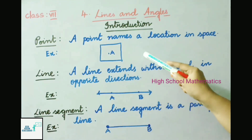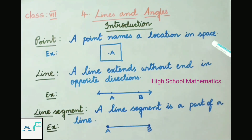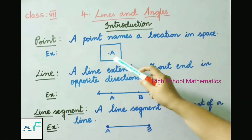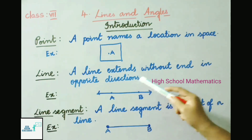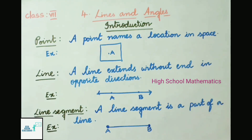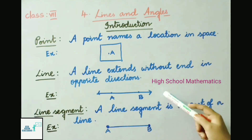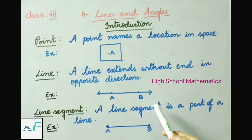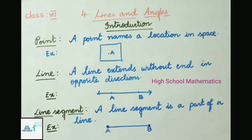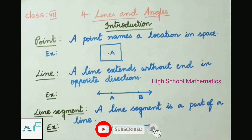A point names a location in space. See example: point A. Next, the definition of a line — a line extends without end in opposite directions. See the example: line AB, where A and B are points on this line, both going to extend in opposite directions endlessly.